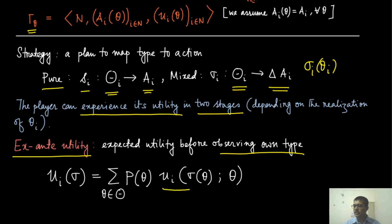We will call the utility realized before observing their own type as the ex-ante utility for player i. Because the type has not realized even for the agent itself, the utility is an expected utility over the whole theta vector. So u_i of a specific sigma of theta — this is actually sigma_1(theta_1), the vector of all sigmas.